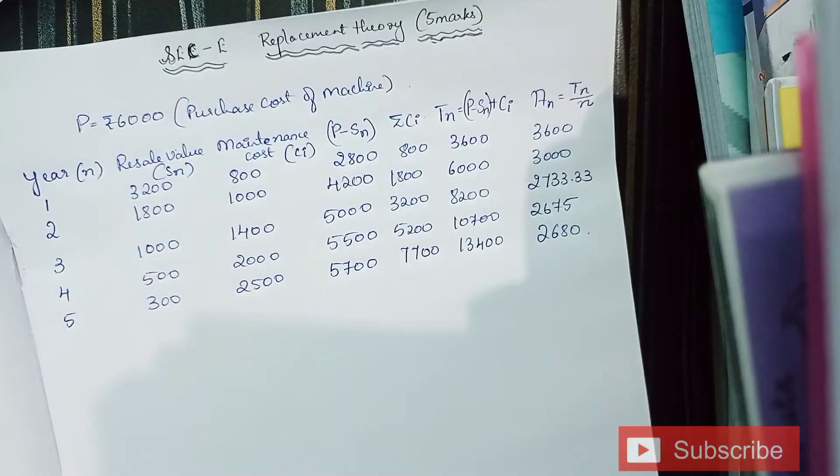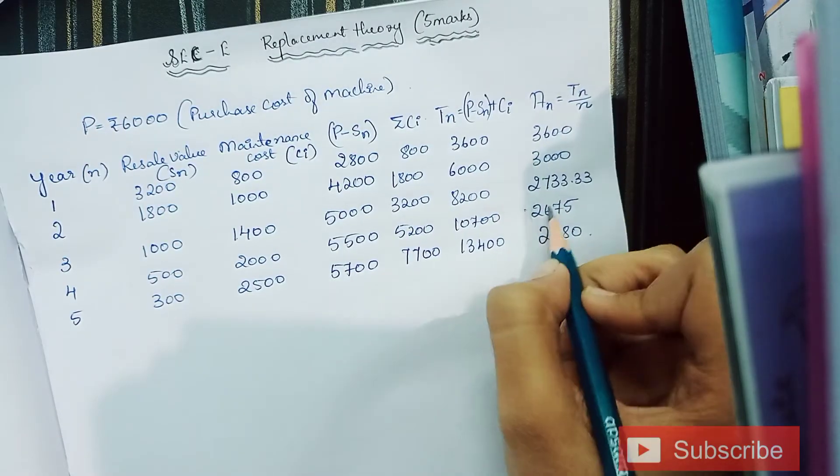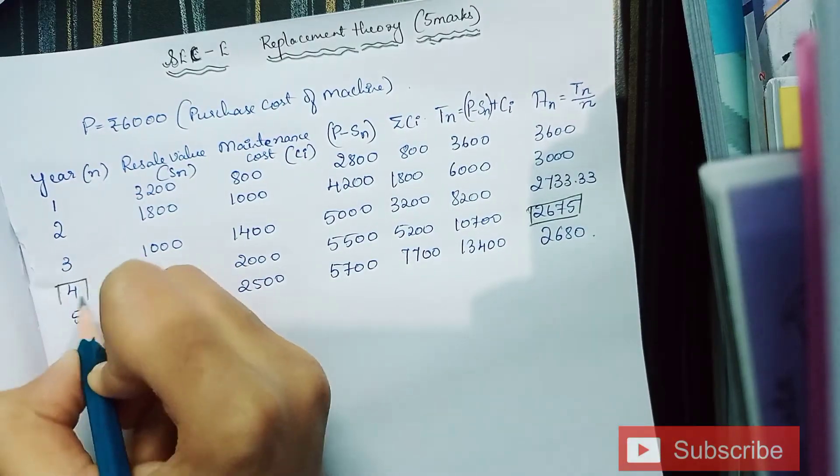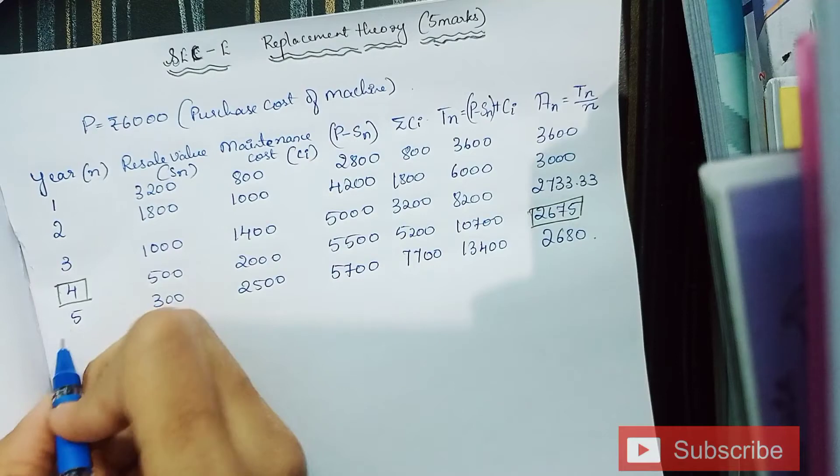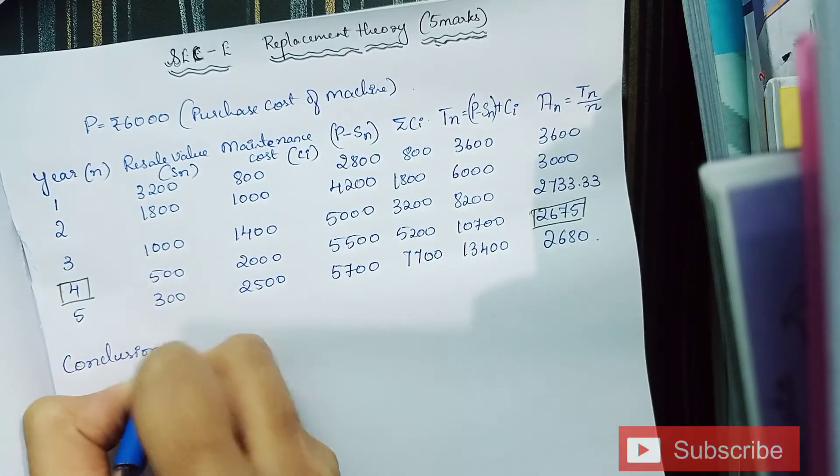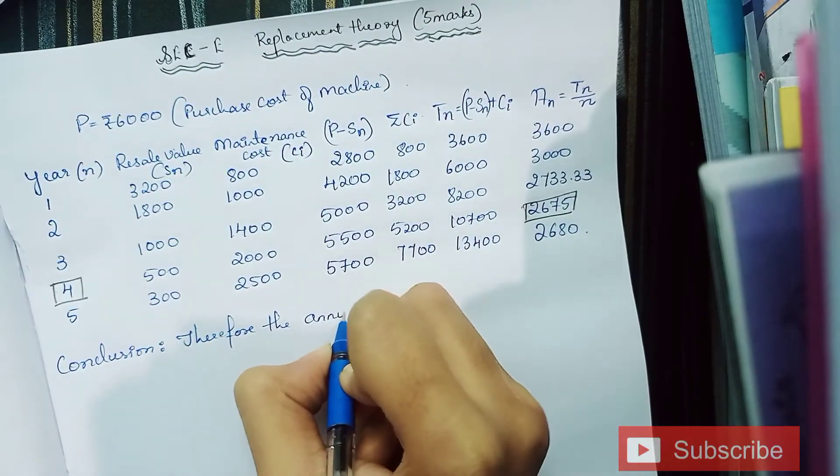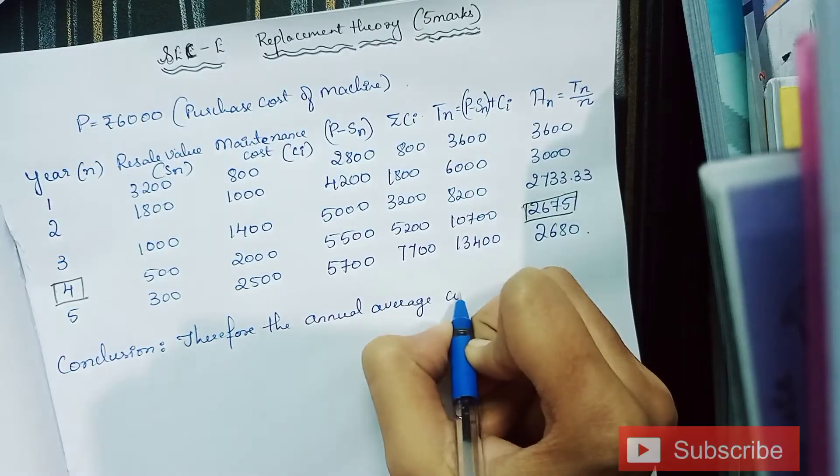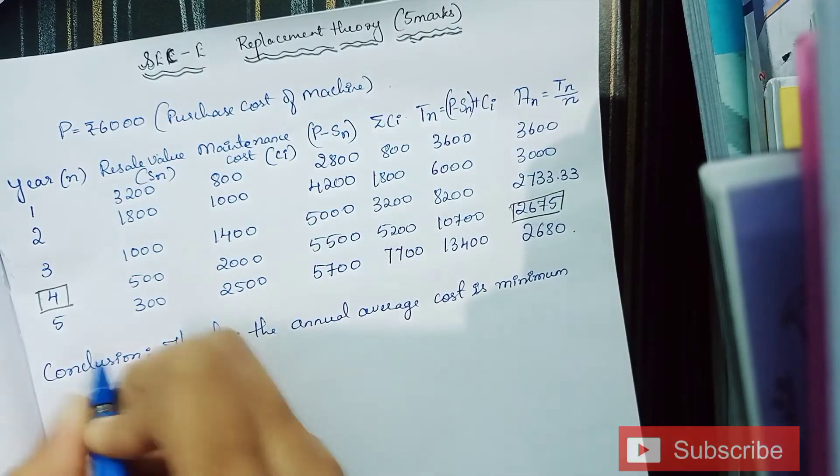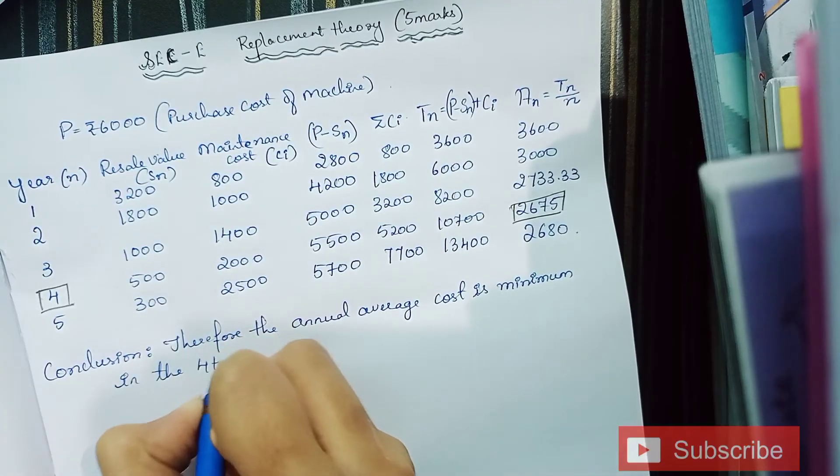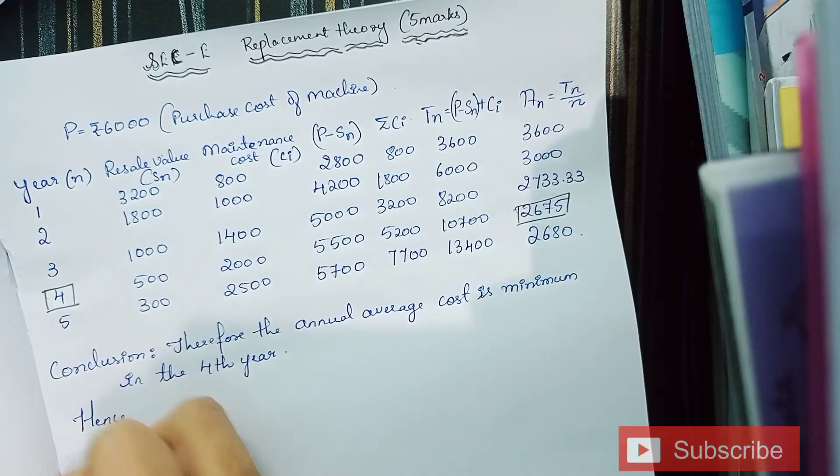After the AN column, just look at all those values and determine which is the least score. 2675 is the minimum value. Just box it with its year and we are going to write the conclusion.